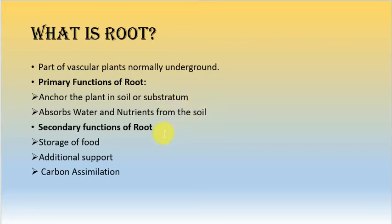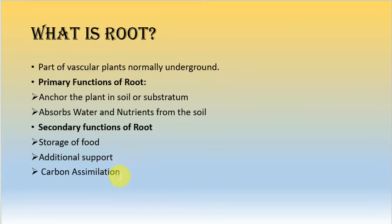Apart from these main functions, roots also perform secondary functions. The first secondary function is the storage of food — generally done by leaves or fruits, but certain plant roots can also store food material. If the plant requires additional support, adventitious roots are formed. Certain plant roots can also perform photosynthesis and carbon assimilation.